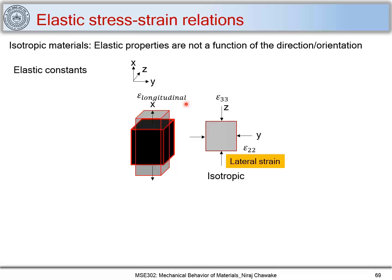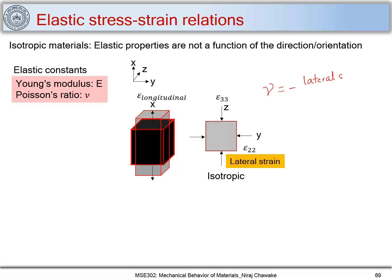We have two elastic constants we have already been introduced to: Young's modulus and Poisson's ratio. Young's modulus relates normal stresses with normal strains, and Poisson's ratio relates the lateral strain with the longitudinal strain. Poisson's ratio is defined as minus of lateral strain upon longitudinal strain.